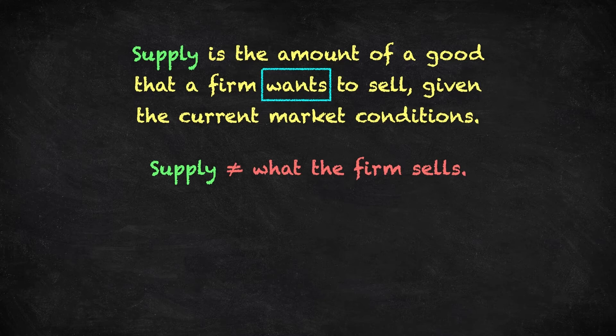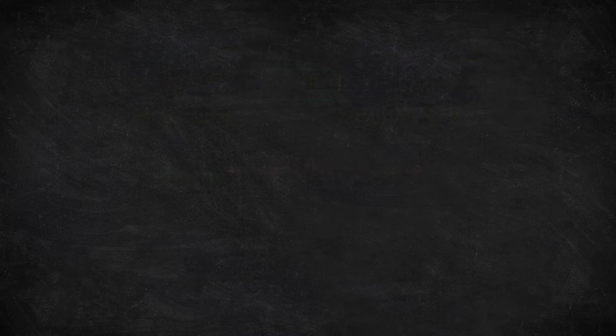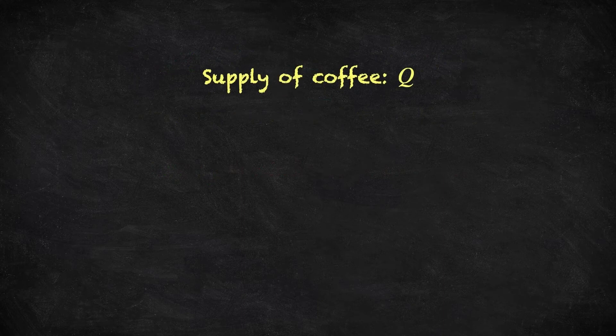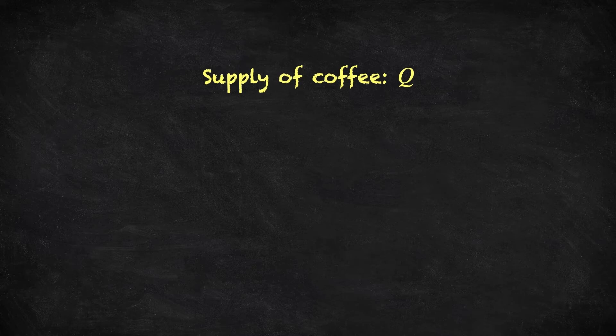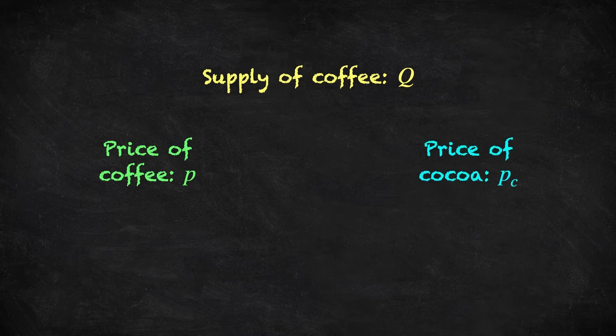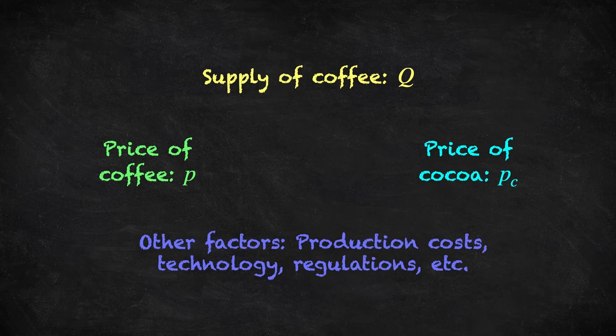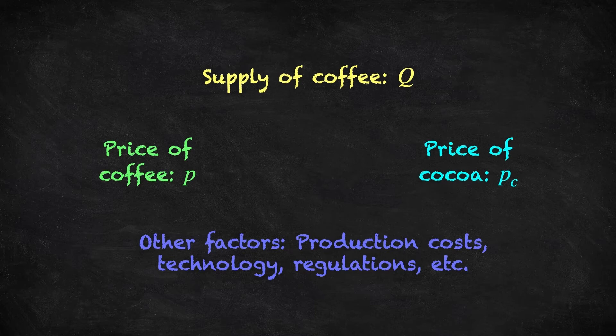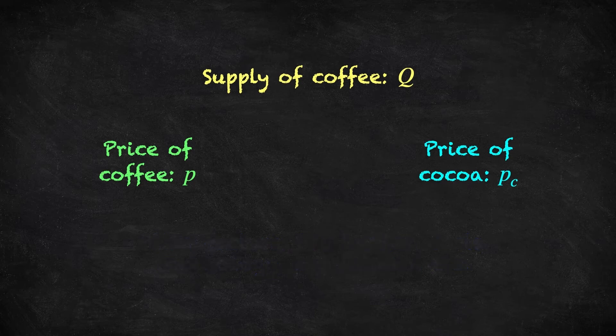There are various things that could affect the firm's supply decision, so let's continue thinking about coffee, as we did when we discussed demand. The supply of coffee, capital Q, is clearly going to be affected by the market price of coffee, P. Now, farmers who grow coffee could instead use their land for growing cocoa, so perhaps the price of cocoa could affect supply too. Other factors affecting supply might include production costs, the firm's technology, government regulations, the time of year and so on. Let's keep it simple for now and focus on these two price variables.